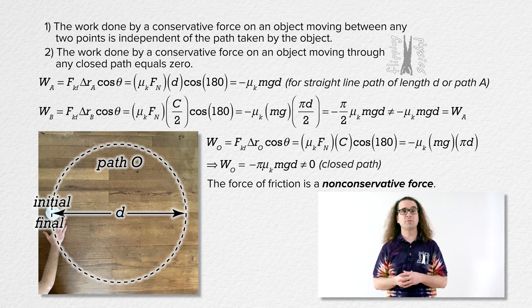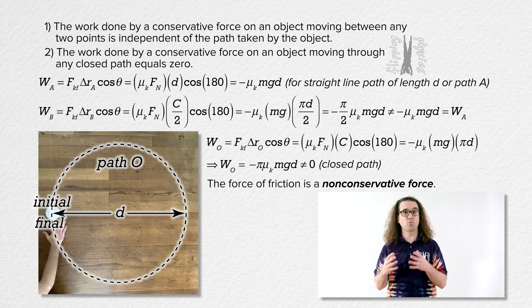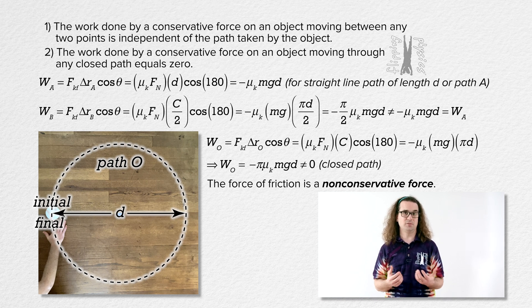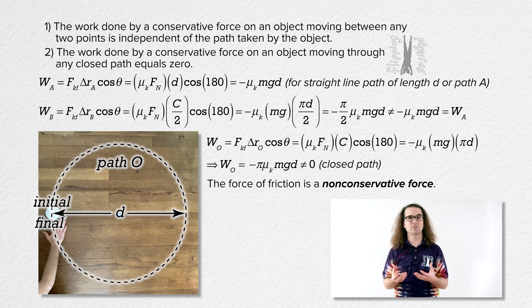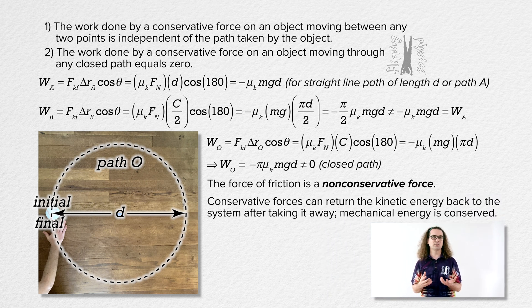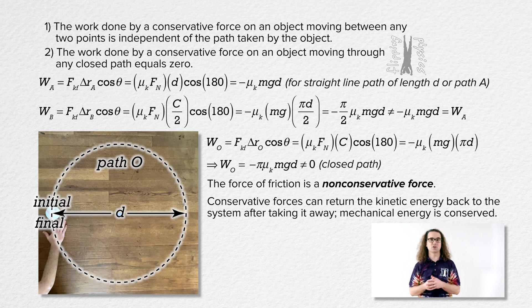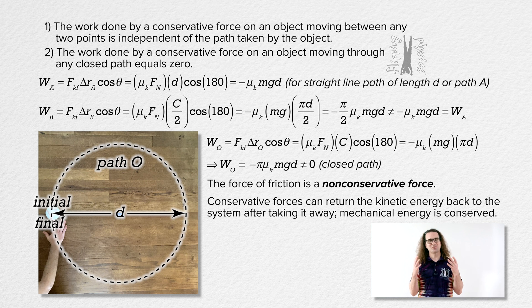Again, work done by the force of friction converts kinetic energy into thermal energy, and the object and surface get warmer after going through the full circle than after the half circle. One last point: a more basic definition of conservative forces is that they are forces that can return the kinetic energy back to the system after taking it away, and therefore mechanical energy is conserved — which is why we can use conservation of mechanical energy, hence the name conservative forces. Thank you very much for learning with me today.